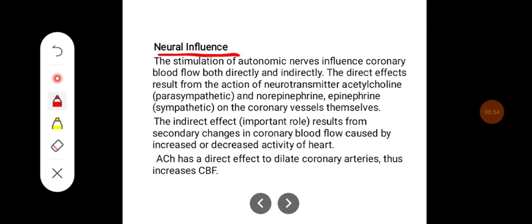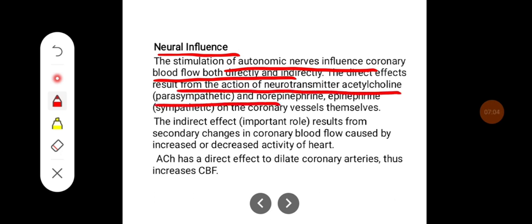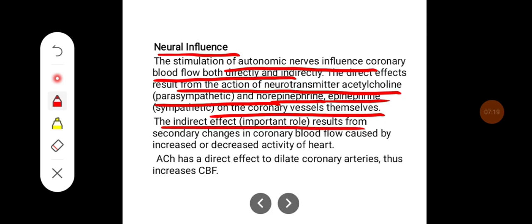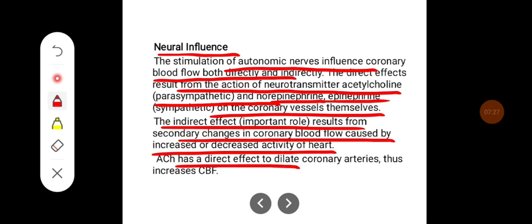Neural influence: stimulation of autonomic nerves influences coronary blood flow both directly and indirectly. The direct effect results from the action of neurotransmitters — acetylcholine (parasympathetic) and norepinephrine (sympathetic) — on the coronary vessels themselves. The indirect effect results from secondary changes in coronary blood flow caused by increased or decreased activity of the heart. Acetylcholine has a direct vasodilatory effect on the coronary arteries, thus increasing coronary blood flow.